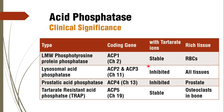Coming to the isoenzymes of Acid Phosphatase, there are four isoenzymes: LMW low molecular weight phosphotyrosine protein phosphatase, lysosomal acid phosphatase, prostatic acid phosphatase, and tartrate resistant acid phosphatase. Each has respective coding genes ACP1, 2, 3, 4, and 5. Depending on stability with tartrate ions, these are differentiated. Tartrate resistant acid phosphatase is the bone isoenzyme of acid phosphatase.